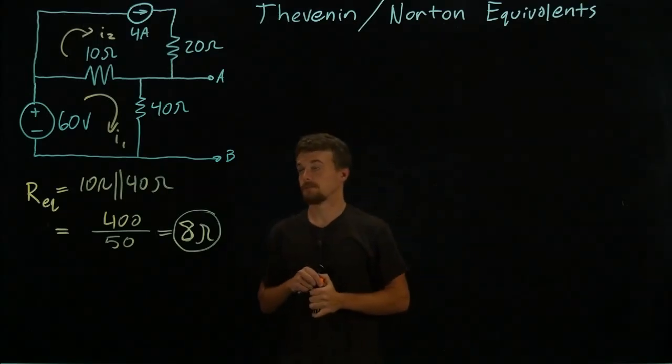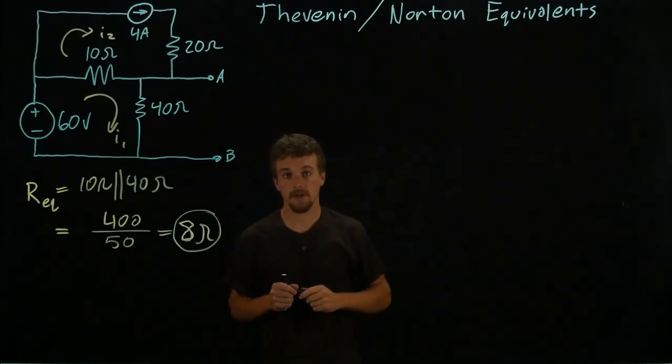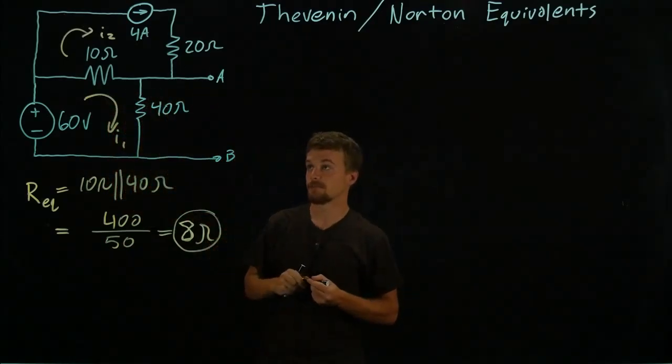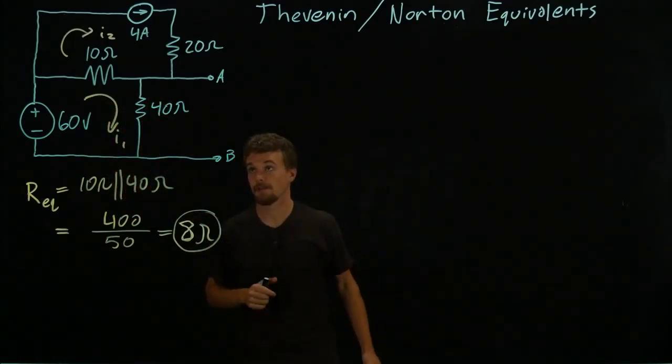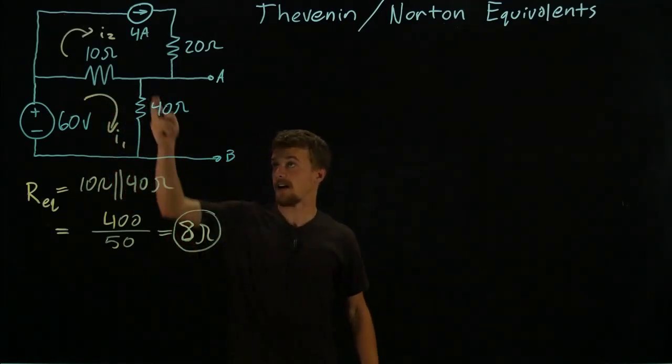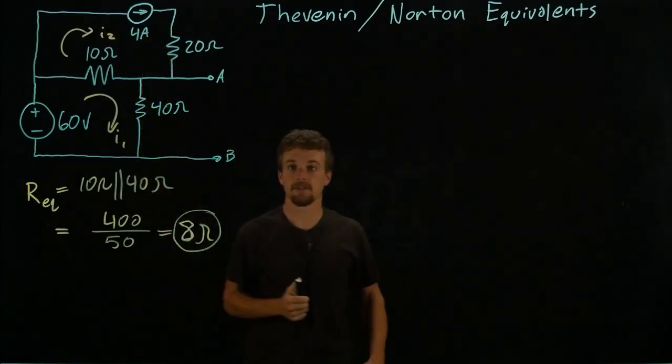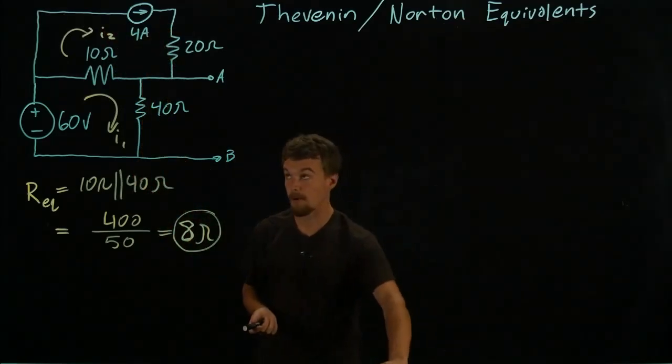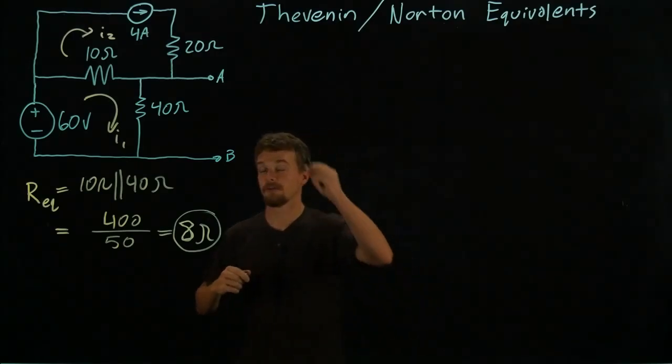Okay, so then we use KVL to sum all the voltages around here and we set them equal to zero. Actually, one thing we can see right now is that I_2 is defined by that source. It's four amps, so we'll set up one equation using I_1. Anywhere I_2 comes into play we'll just sub in four amps.